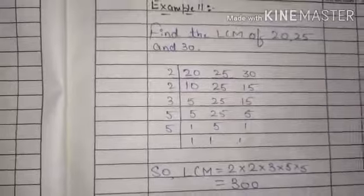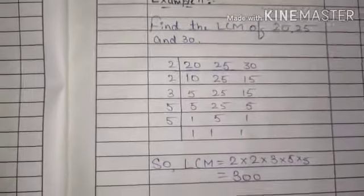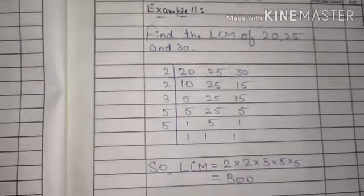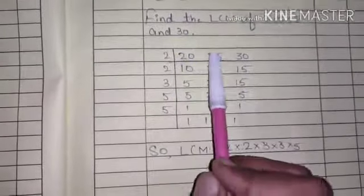This is the second method. You can try this also, and just as we found HCM, you can try this way also. After prime factorization, this is the second method. First of all, we will write numbers in the type of column, 20, 25, 30.